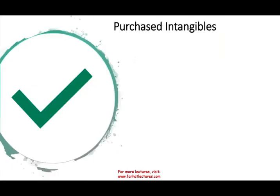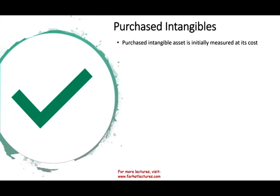How do we account for intangibles? We can purchase an intangible — go to another company and say, would you like to sell your patent, or can I have the right to use your software? You're buying an intangible. Purchased intangibles are pretty straightforward — they are measured at cost. When you buy an asset, you measure it at cost.